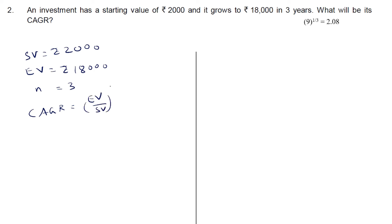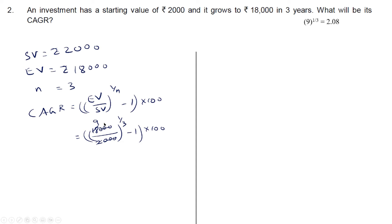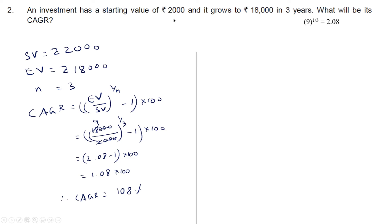Using all these, compound annual growth rate equals ending value upon starting value, the whole raised to 1 by N, minus 1, into 100, which is 18000 upon 2000, the whole raised to 1 by 3, minus 1, into 100. This simplifies to 9 raised to 1 by 3, minus 1. The value of 9 raised to 1 by 3 is 2.08, so it is 2.08 minus 1, into 100, which is 1.08 into 100. Therefore compound annual growth rate equals 108 percent.